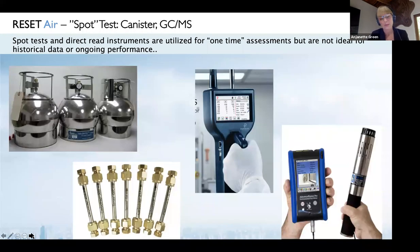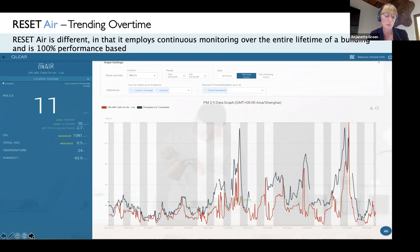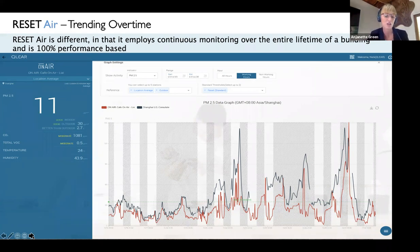These next examples show lab test methods and direct read methods, some referenced as US EPA compendium methods — canister tests — compared to what trending data looks like on one of our dashboards. If you were to take a spot test, depending on where you took that sample, your results are either going to be very good or very bad. All methods have a place in a complete assessment, but it's our responsibility to understand the pros and cons so we can deploy the correct methodology for our particular buildings.